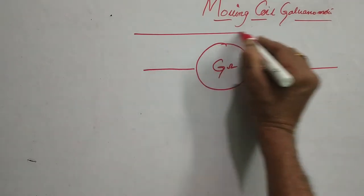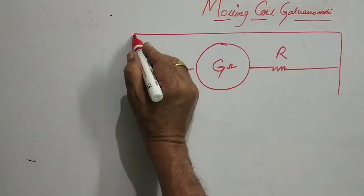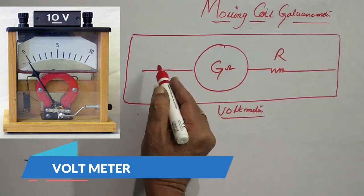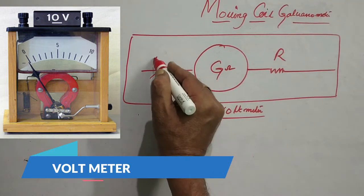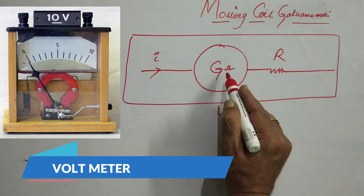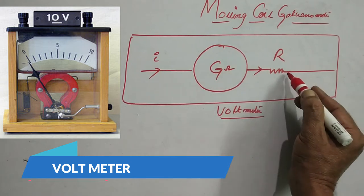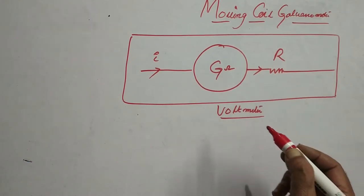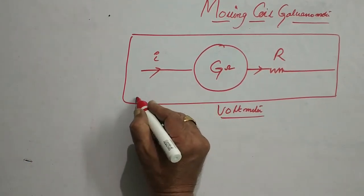This setup is called the voltmeter. Suppose in this circuit, if I current is passing through the galvanometer, the same current will also pass through the resistance wire as they are connected in series.